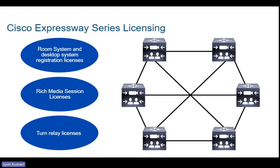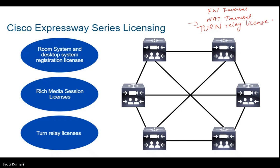TURN relay licenses are required to enable Expressway TURN, which stands for Traversal Using Relay NAT — that is, traversal using relay network address translation. We discussed two main functionalities of Expressway: firewall traversal and NAT traversal. When you need to do NAT traversal, a TURN relay license is required. For example, if you have NAT configured and need NAT traversal for your mobile and remote users, a TURN relay license is needed. TURN acts as a proxy for the NAT server.